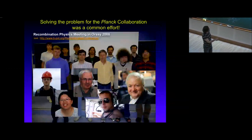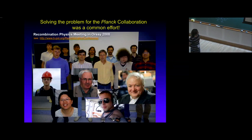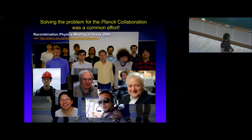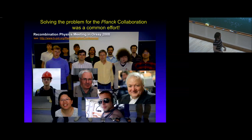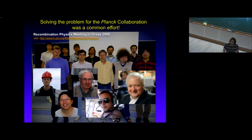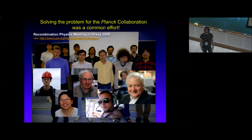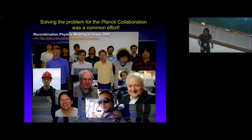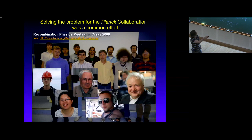With a problem this complex, many people were involved. This picture was taken in 2008 at a meeting in Orsay specifically targeting preparation for Planck analysis. There you can see Rashid, Viktor Dubrovich (who played a crucial role especially for the recombination radiation), Saveli Karshenboim (an expert in quantum electrodynamics), Yassine Ali Hammoud, Chris Hirata, Dan Grin, Jose Rubino-Martin, Douglas Scott (one of the pioneers of RecFast calculations), Jeffrey Fung, Kulubchenko, and several others who contributed.